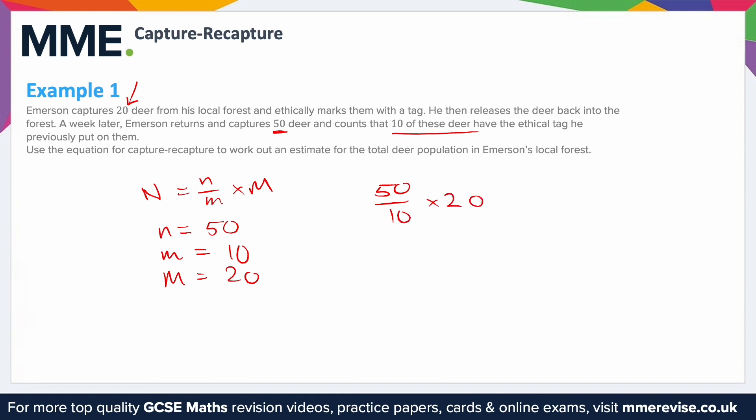Working this out: 50 divided by 10 is 5, and 5 times 20 is 100. So the estimate — and remember this is purely an estimate, not a really accurate number, but it gives a good idea of how many there are — is 100 deer.